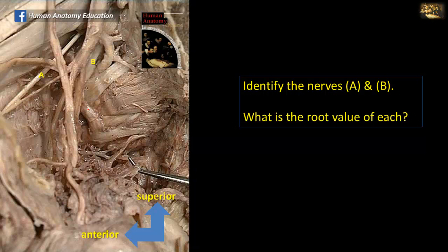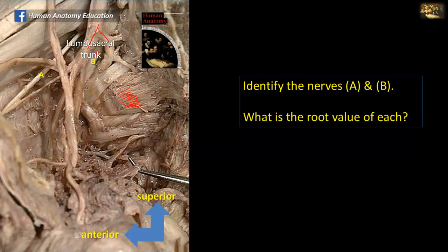Identify the nerves A and B. What is the root value of each? This is a close-up sagittal section of a pelvis. Here you can see the internal iliac artery and its posterior and anterior divisions. These muscle fibers are piriformis muscle. In front of piriformis is the sacral plexus, formed by L4, 5, S1, 2, 3, and 4. This is the lumbosacral trunk from L4 and 5, and here is S1. Between the lumbosacral trunk and S1 is the superior gluteal artery.